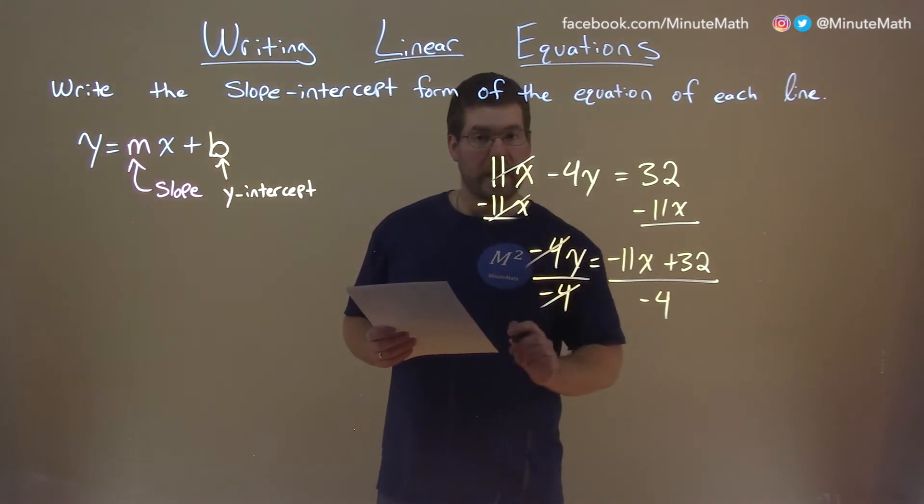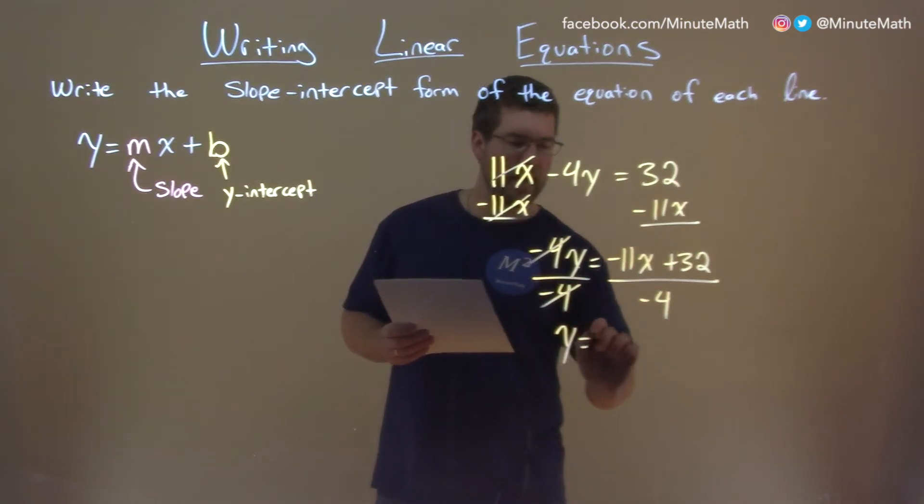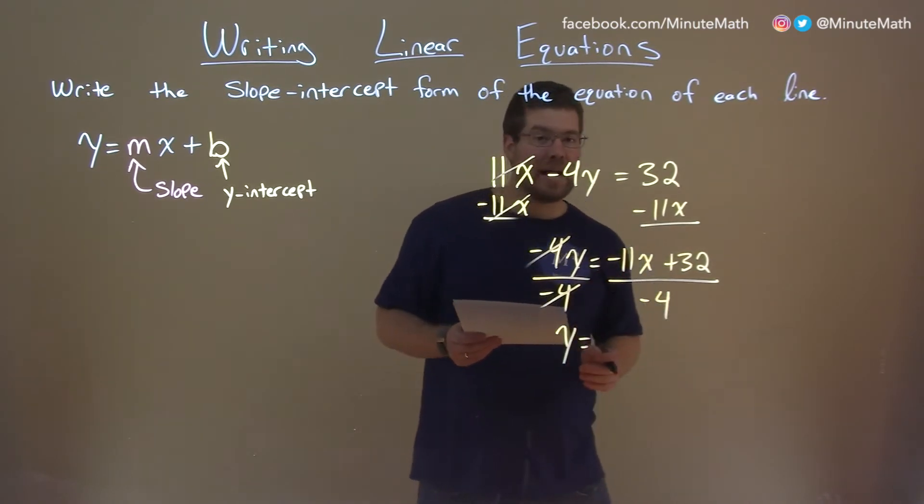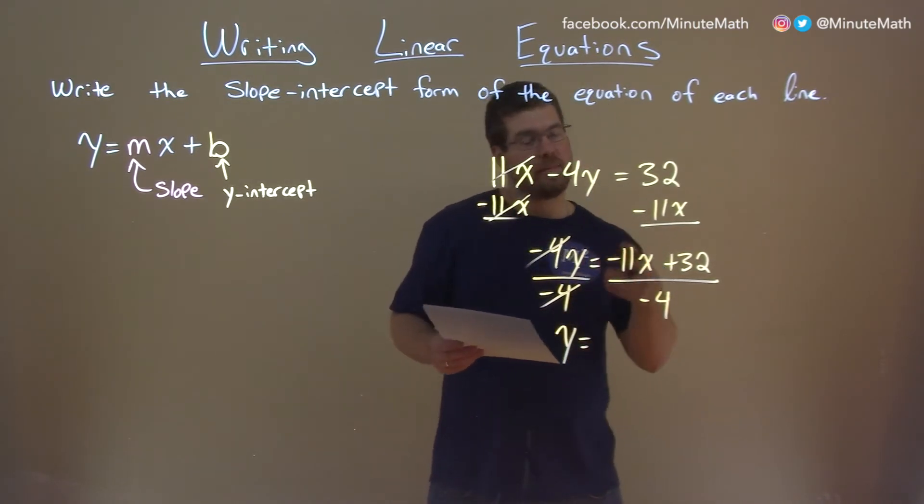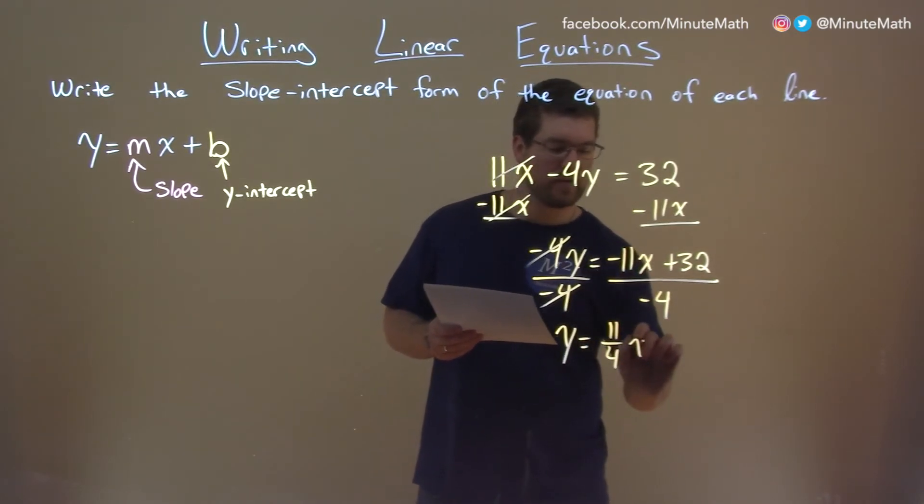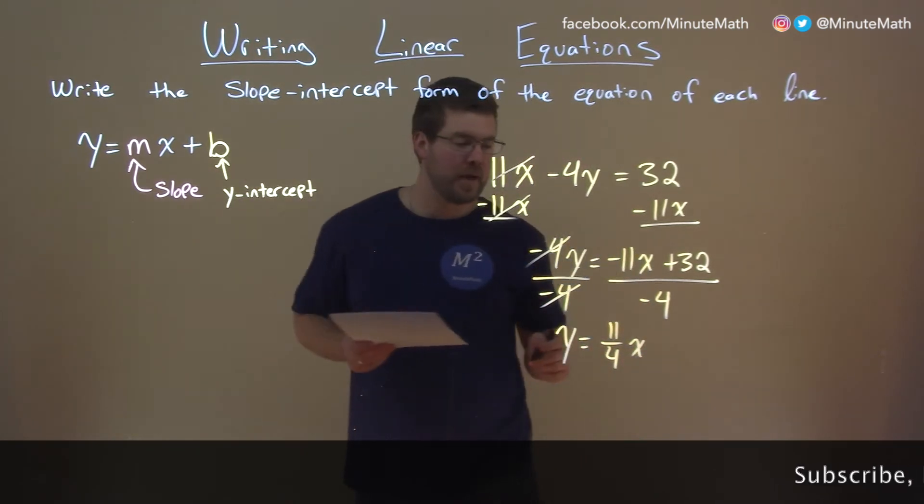Negative 4s cancel, that gives us y by itself. So, now I have a negative 11 divided by negative 4, two negatives make a positive. Nowhere else for this to simplify, so we just have a positive 11-fourths x. That's our slope value, 11-fourths.